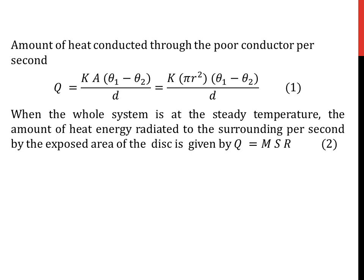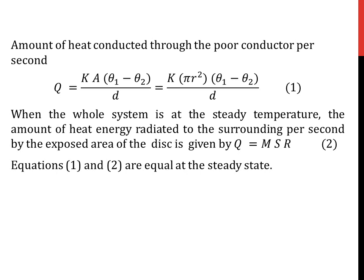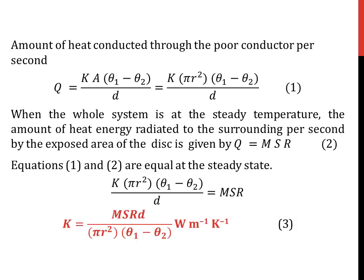This heat conducted through the poor conductor reaches the metal disc, and we have radiation coming out of the metal disc from its exposed area. This heat energy is given by q = mSR, where m is the mass of the disc, S is the specific heat capacity of the material of the disc, and R is the rate of cooling of the disc. This is equation 2. Under steady state conditions, we equate the heat conducted to the heat lost due to radiation. From this, on cross multiplication, we find the thermal conductivity K to be mSRd / (πr²(θ1 − θ2)).